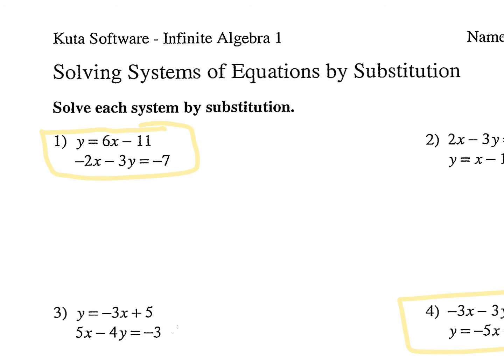For substitution, you have to arrange one of the equations to say y equals or x equals, and then you substitute in. In this case, substitution lends itself to the solving method because you already have one of the equations that says y equals. So what you're going to do is take 6x minus 11 and plug it in where you see the y.